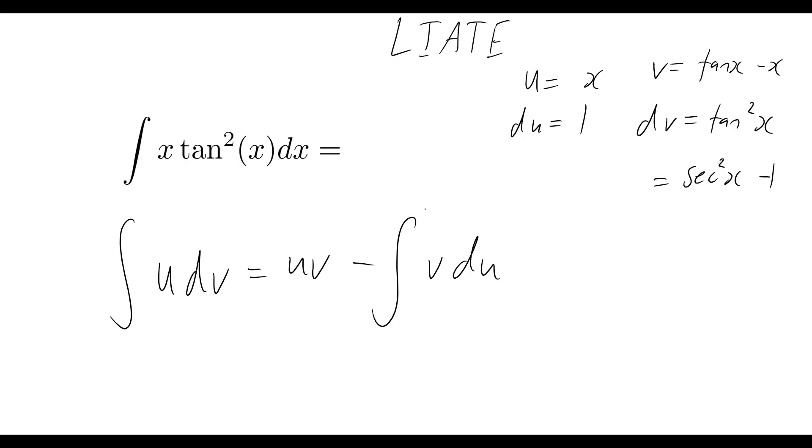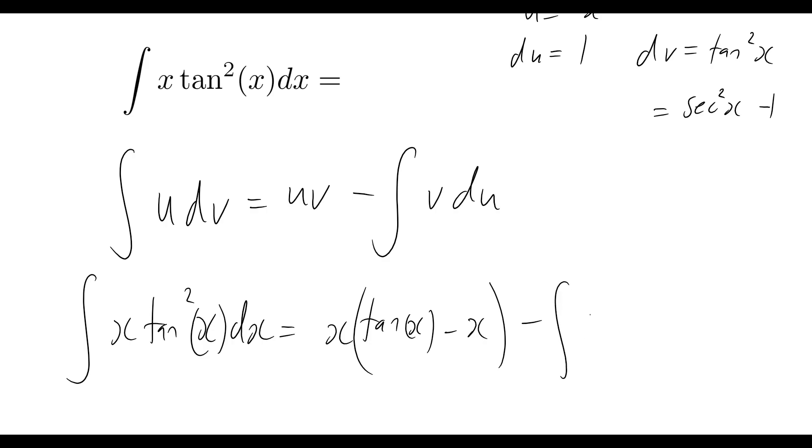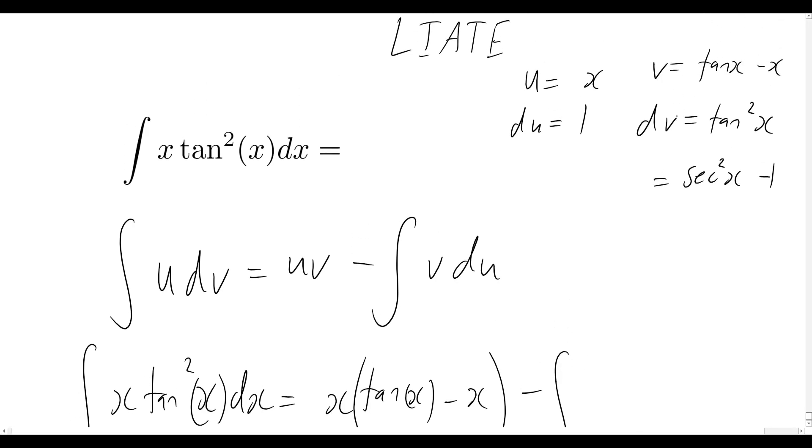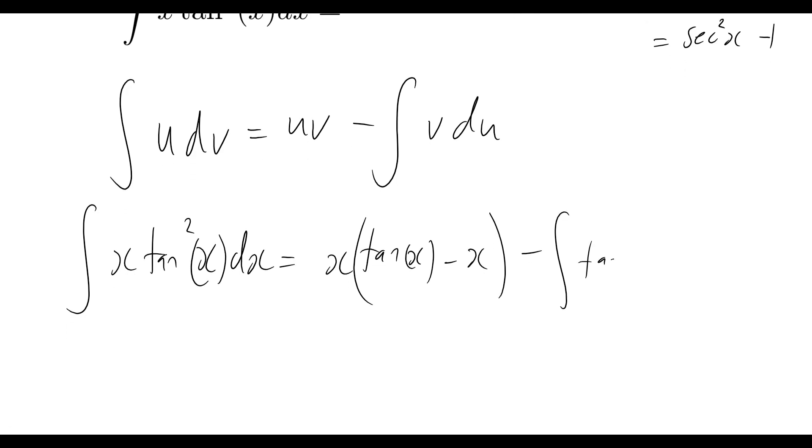Okay, so all we need to do now is start putting all this information into our integration by parts formula, and let's see what we get. So now the integral of x tan squared x dx is now going to be equal to x tan x, and there's brackets there of course, minus x. Now subtracting the integral of tan x minus x, and that's just coming from our v term, and multiplying it by du, which is 1, so we don't really need to worry about that here. So this just now becomes minus integral of tan x minus x dx.